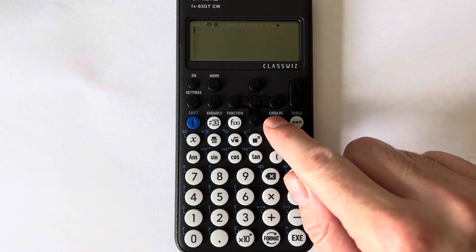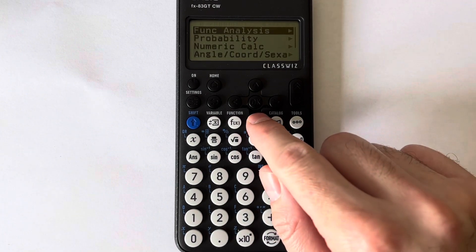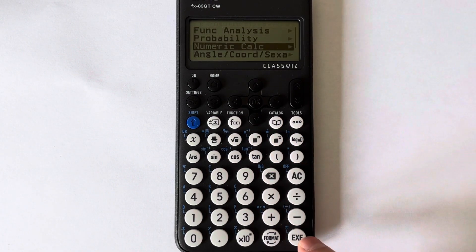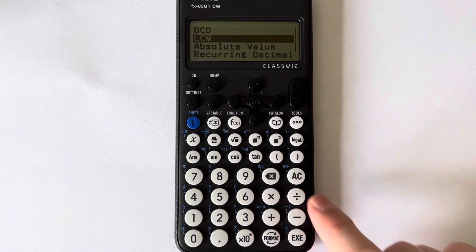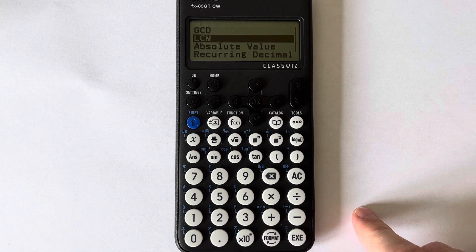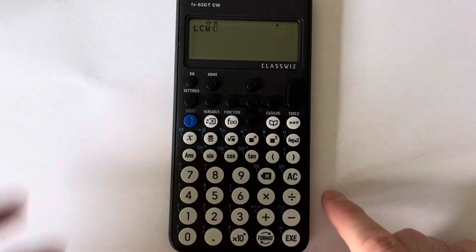To do this, we press catalogue, go down to numeric calc, and scroll down again where it tells you LCM, lowest common multiple. Press the execute key.